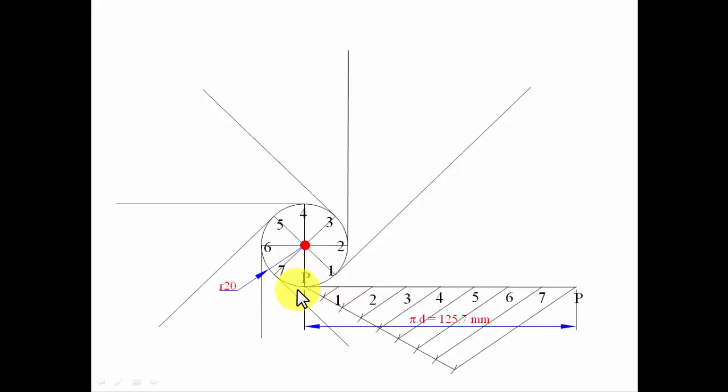When you wind this string along the circumference of this circle, let's say this much portion has come into contact. The remaining portion is from one to P, so with one as center, put an arc. This is point P1. Similarly, on further winding, we reach point two.